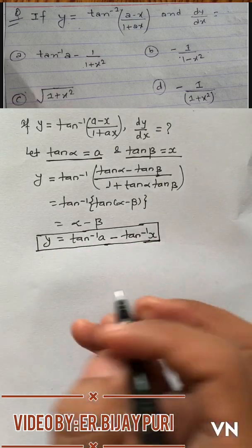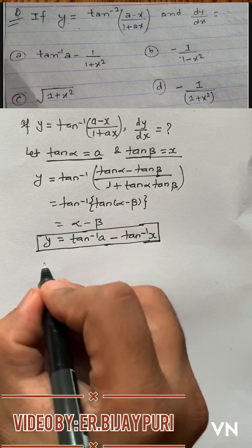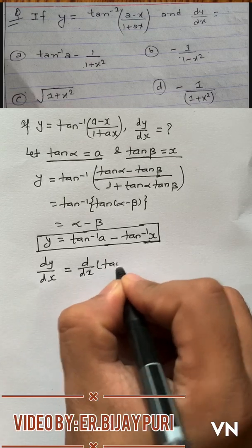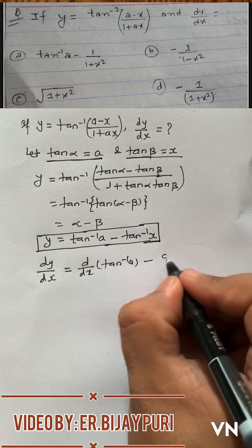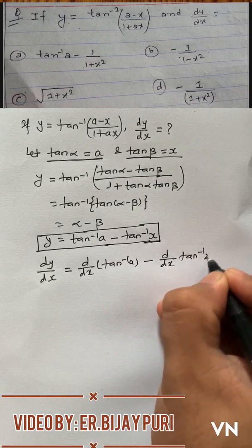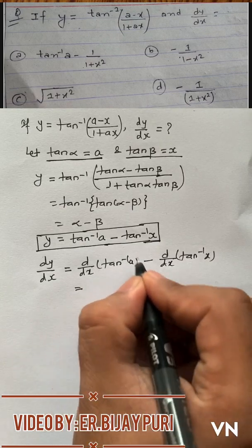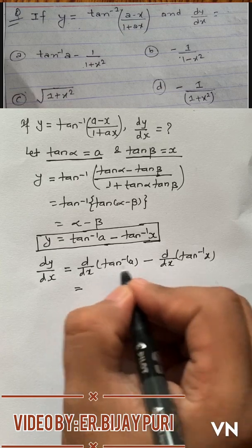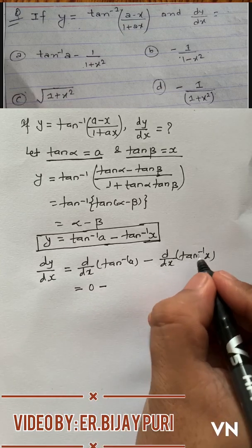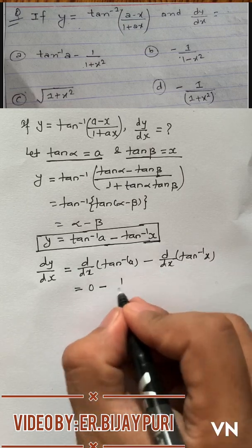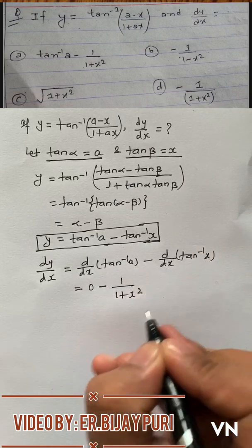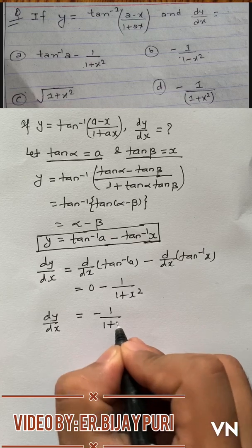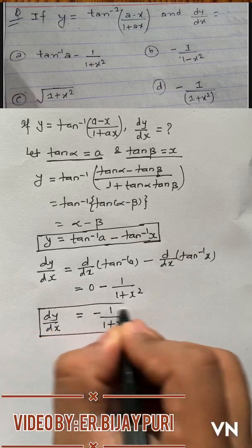So if we get y in this form, then we can write dy by dx equals d/dx of tan inverse a minus d/dx of tan inverse x. This tan inverse a is not dependent on variable x, that means it is constant, and the derivative of constant is zero. The derivative of tan inverse x is 1 by (1 plus x square).